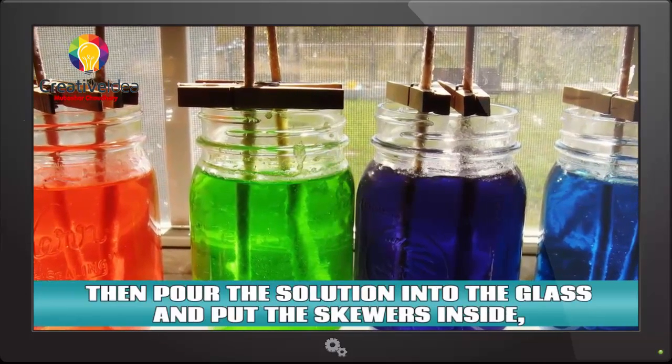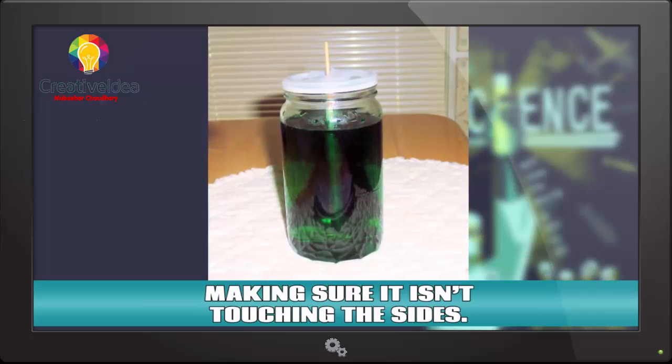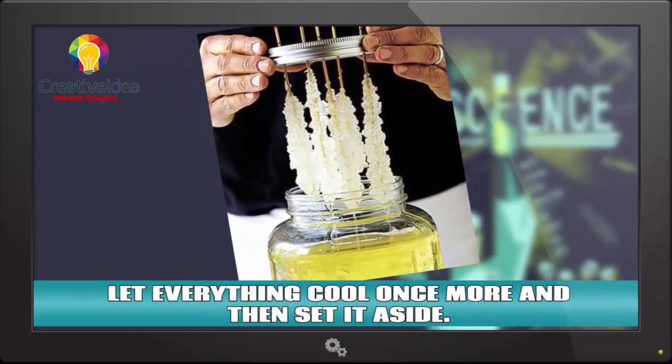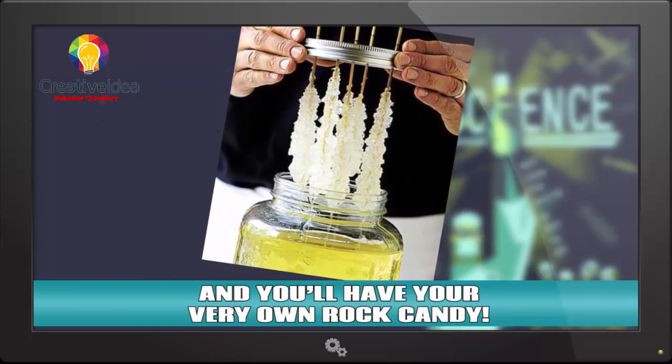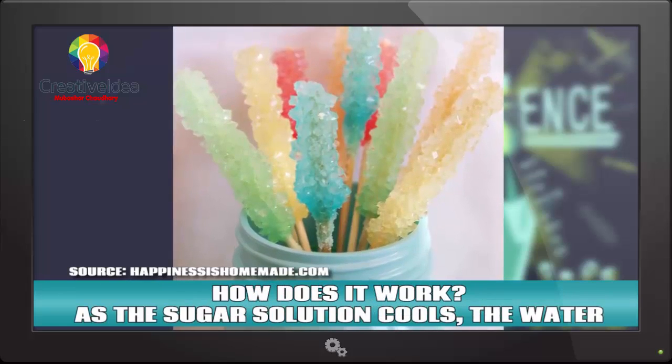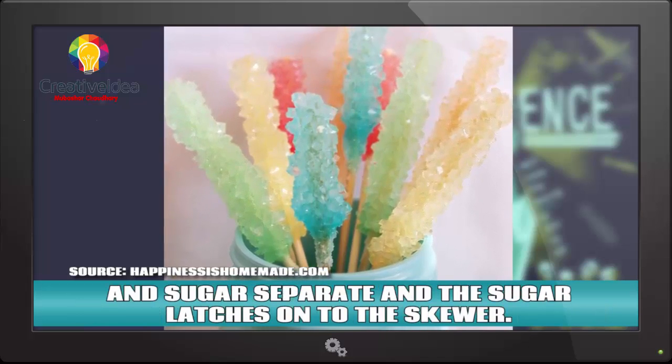Then, pour the solution into the glass and put the skewers inside, making sure it isn't touching the sides. Let everything cool once more and then set it aside. In three to seven days, sugar crystals will grow around the skewer and you'll have your very own rock candy. How does it work? As the sugar solution cools, the water and sugar separate and the sugar latches onto the skewer.